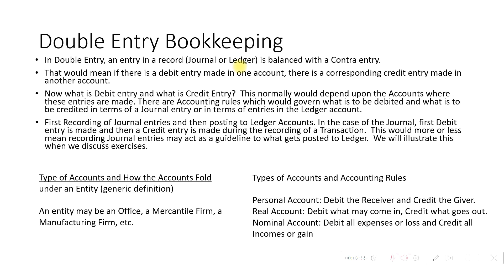In double entry, an entry in a record — whether it is a journal or ledger — is balanced with a contra entry. That means if there is a debit entry made in one account, there must be a corresponding credit entry for that value entered in another account. What exactly is a debit or credit entry depends upon the accounts where the entries are made and the accounting rules which govern what is to be debited and credited.